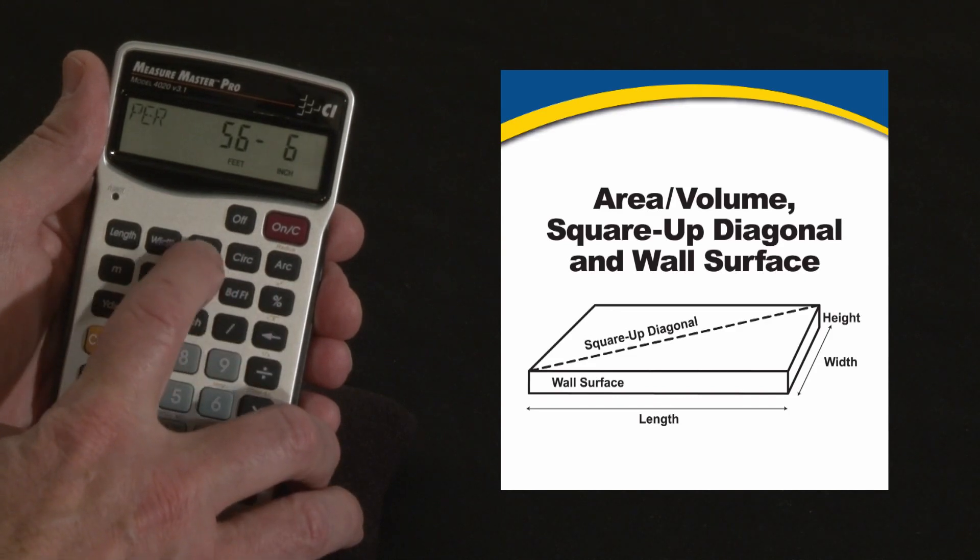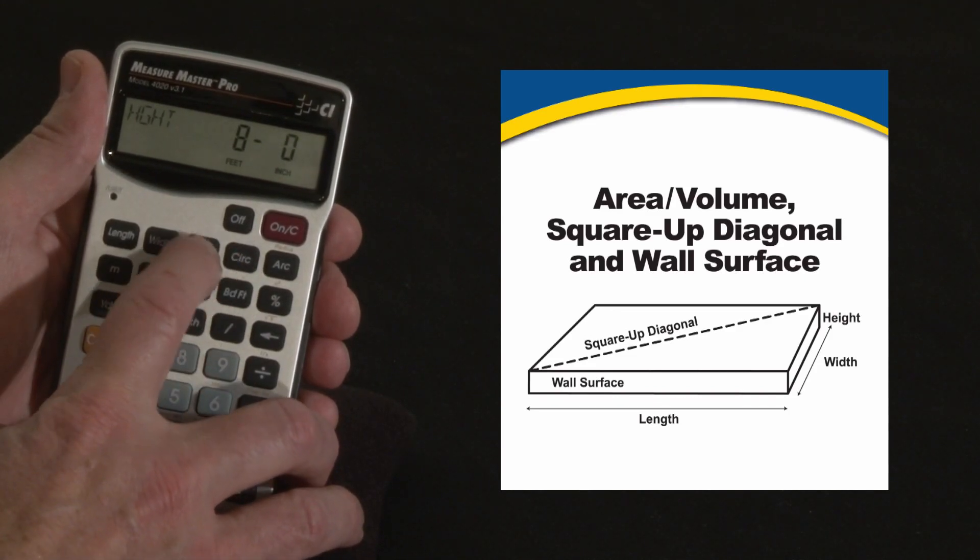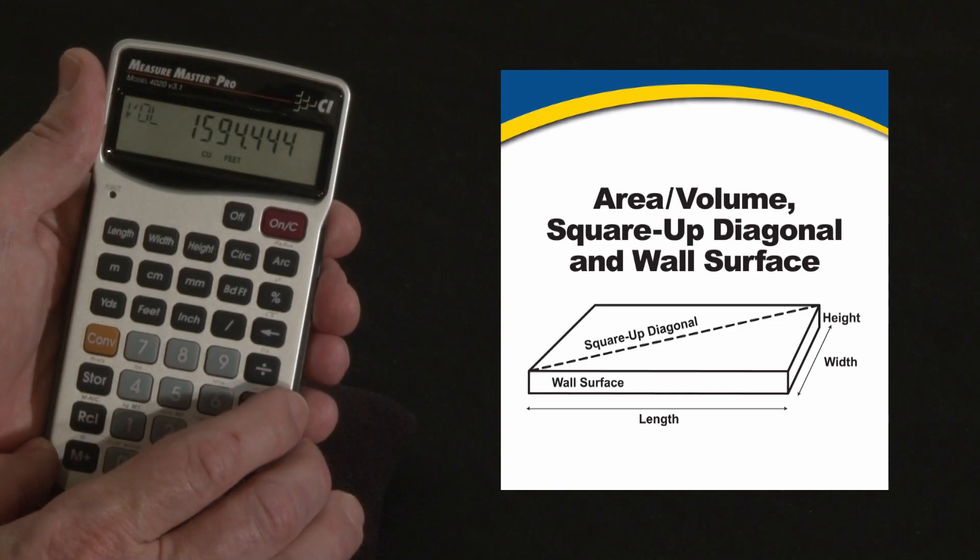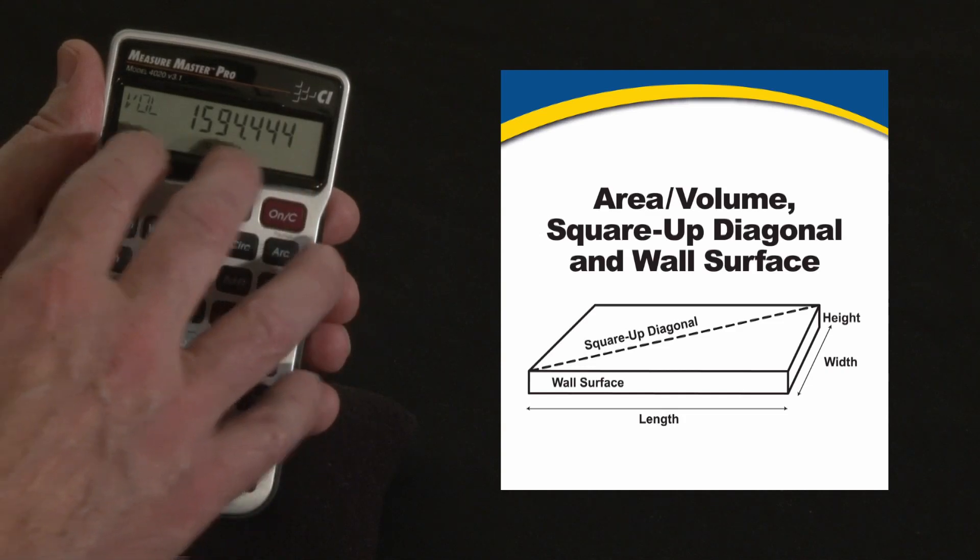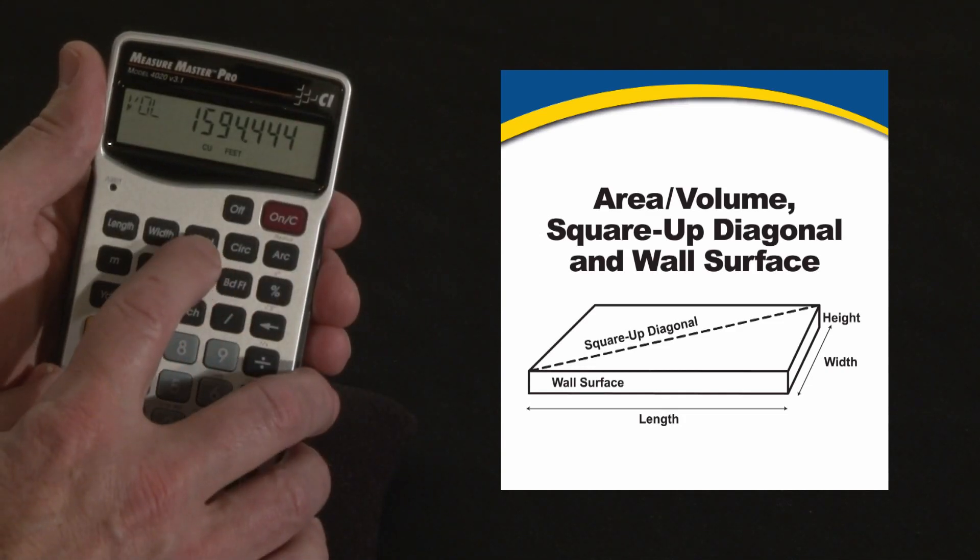I can come over here to the Height key. First press gives me the height, confirms that. The second press is going to give me volume, so if we were doing an excavation of this 8 feet deep, that would be the cubic volume we'd be pulling out of this, but that's not really what we're interested in this example.